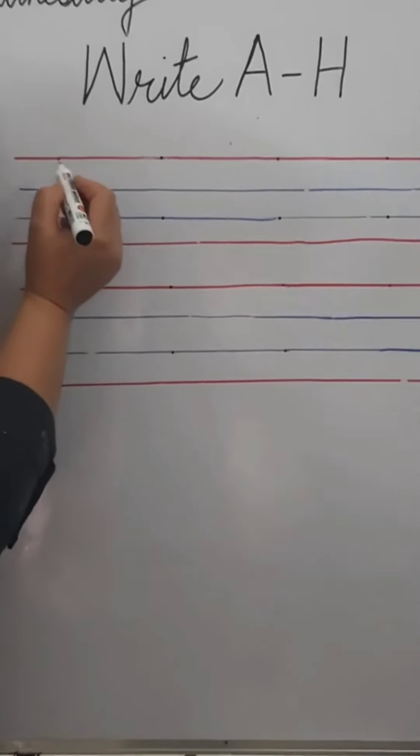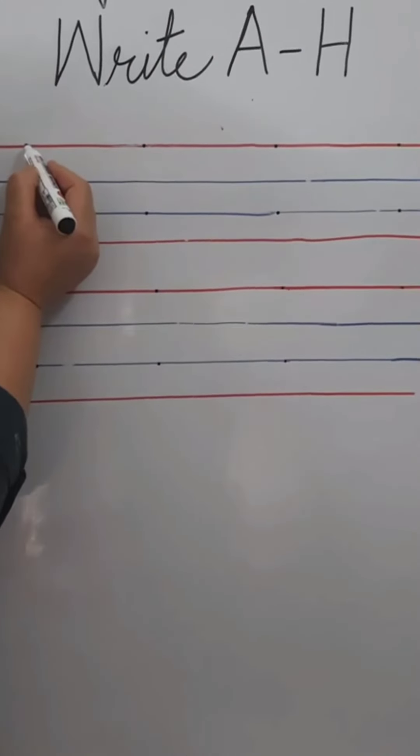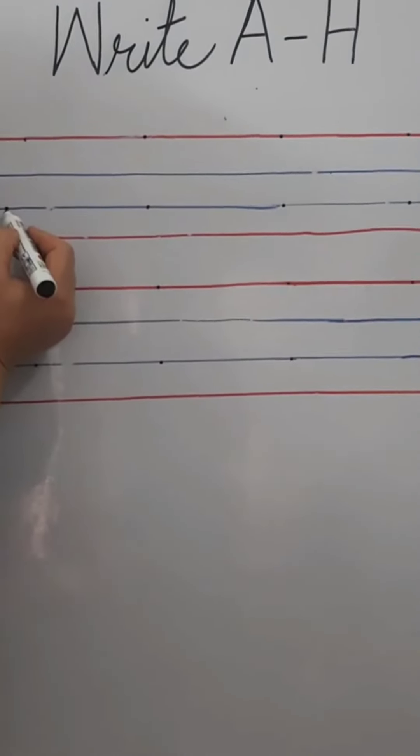Two red lines and two blue lines. And the capital letters, we are going to write from red, first red line to second blue line.